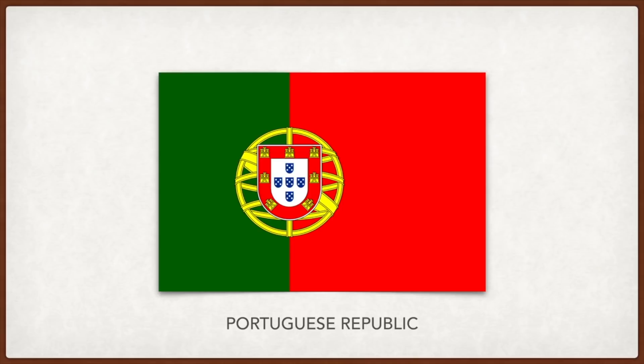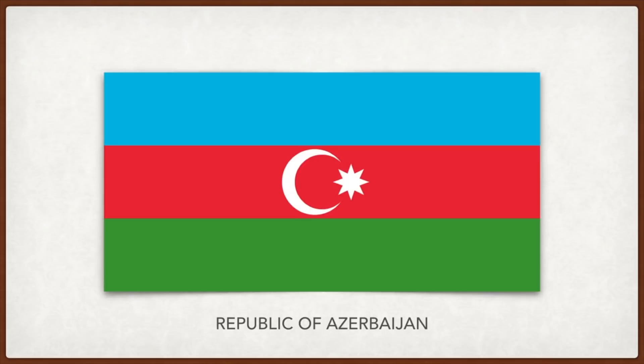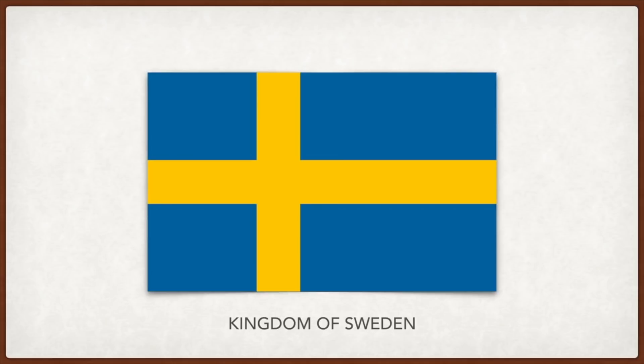Azerbaijan: the blue symbolizes the country's Turkic heritage, the red stands for progress, and the green represents Islam. Sweden: the yellow of the cross represents generosity and Christianity, while the blue background symbolizes loyalty, truth, and justice.